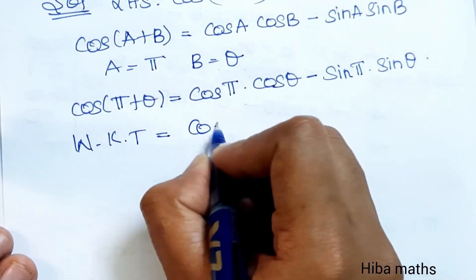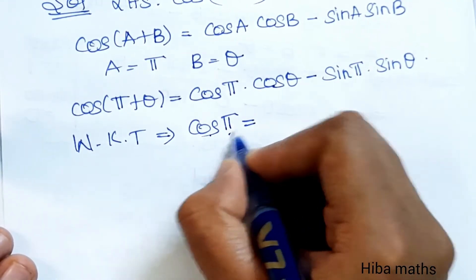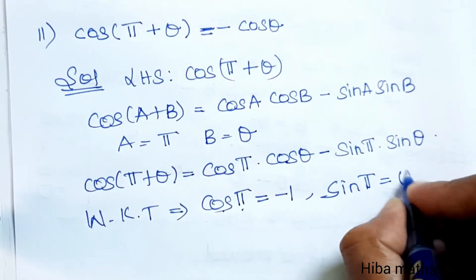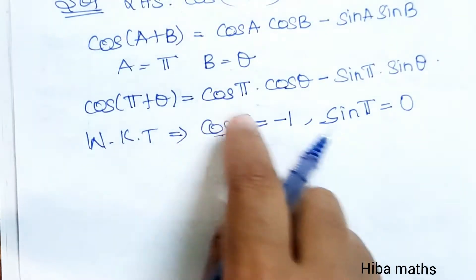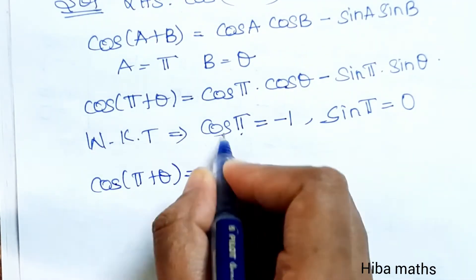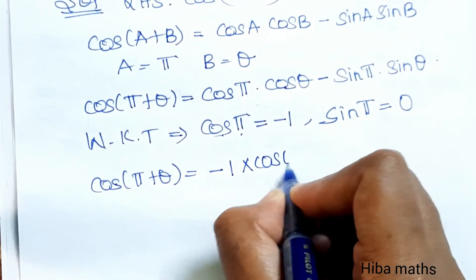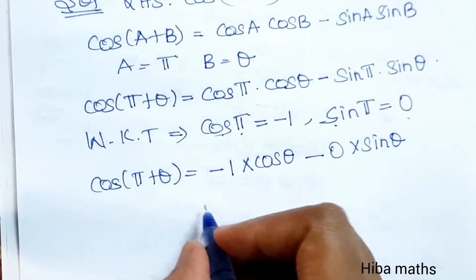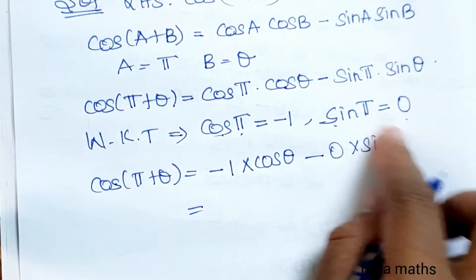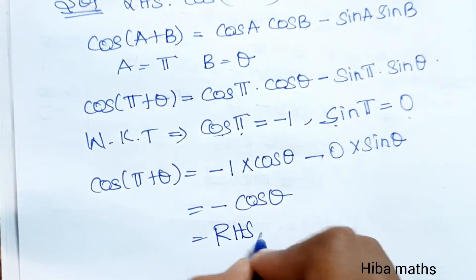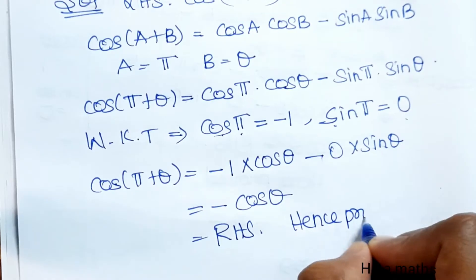We know that cos π = cos 180° = −1, and sin π = sin 180° = 0. Substituting here: cos(π + θ) = (−1) · cos θ − 0 · sin θ = −cos θ. Hence proved.